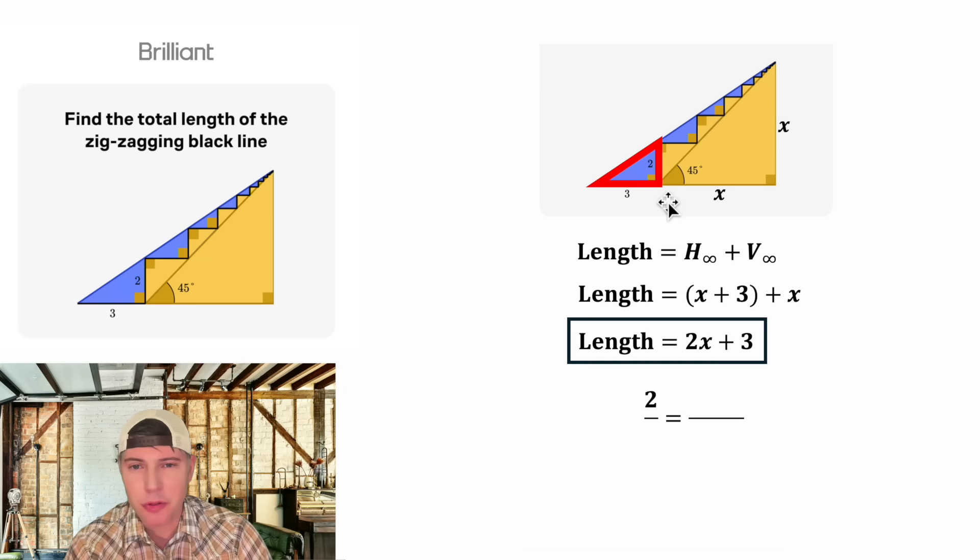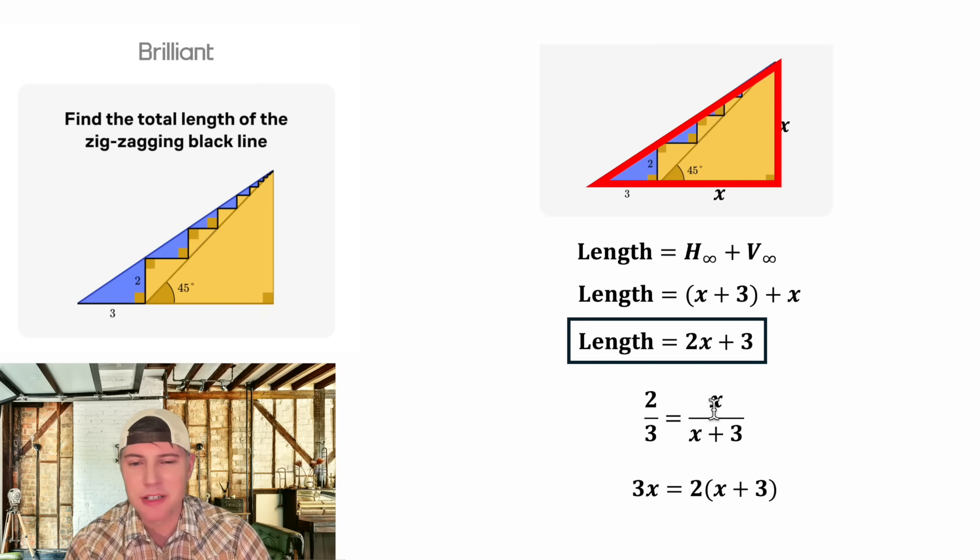They said the two over three equals x over x plus three. From here we can cross multiply three times x and two times this. And then this two can distribute to both of these terms making this side two x plus six. Now we have an x on both sides of the equation. Let's subtract two x from both sides.